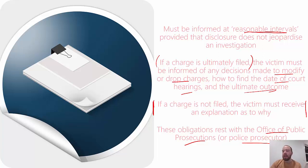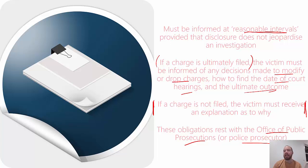This is also a big one: if a charge is not filed or it's discontinued, technically under the legal system you're not a victim anymore because no one's been convicted. But if prosecution or police decide not to charge someone or to discontinue charges, they need to explain to you why. The whole idea is just keeping you in the loop to hopefully deal with some of the stress people might feel as they're trying to get justice as a victim.